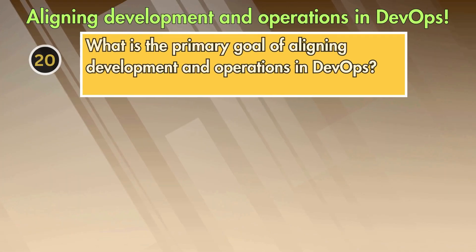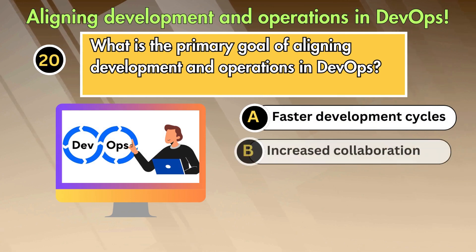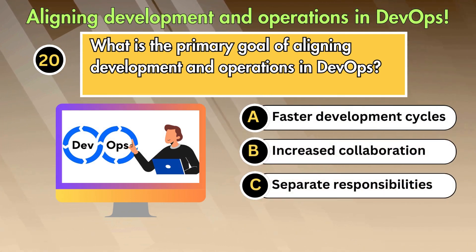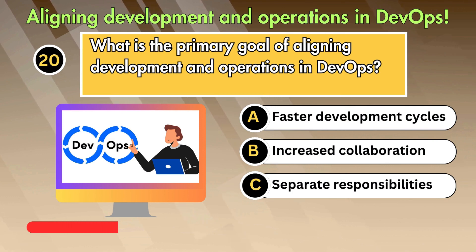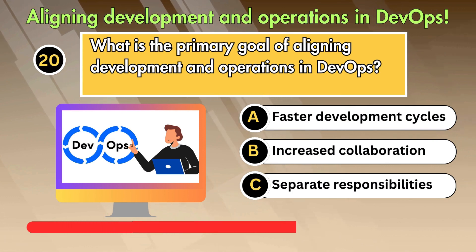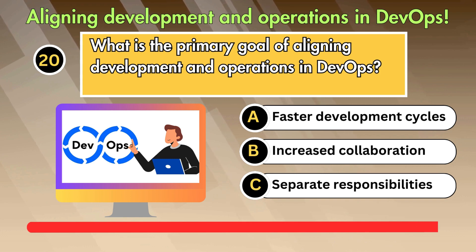What is the primary goal of aligning development and operations in DevOps? Option 1: Faster development cycles. Option 2: Increased collaboration. Option 3: Separate responsibilities.